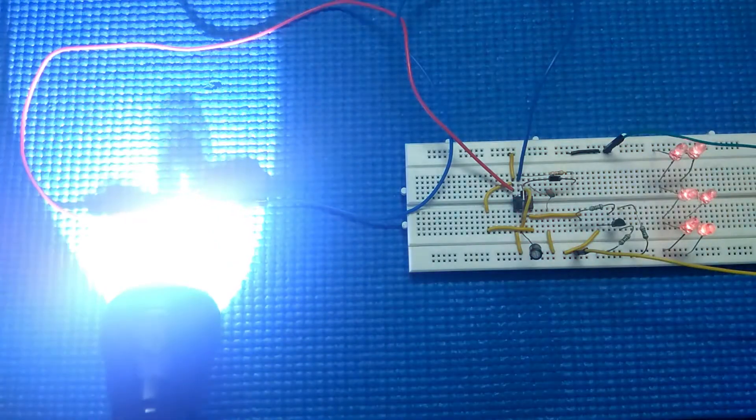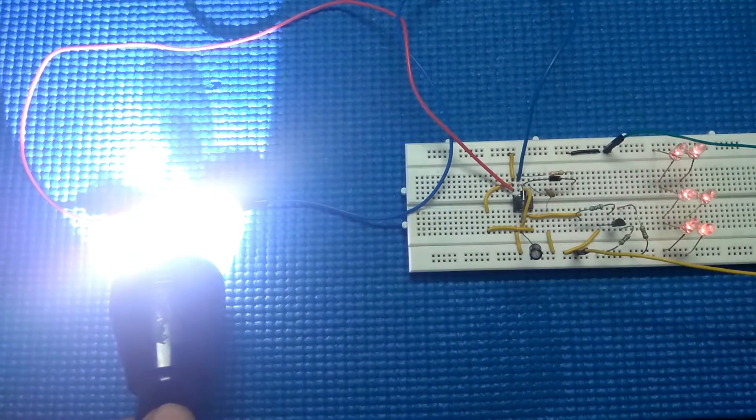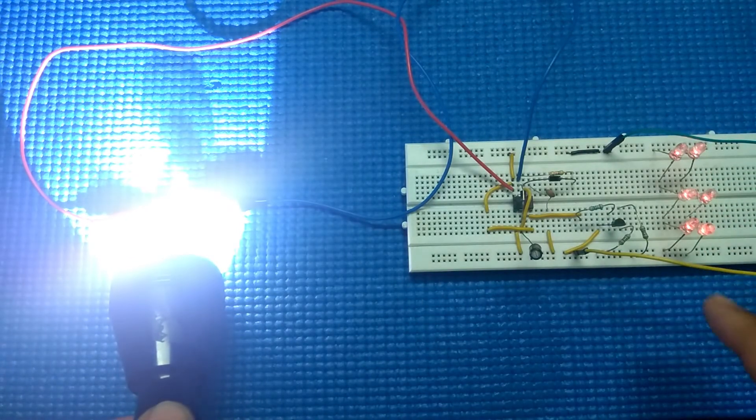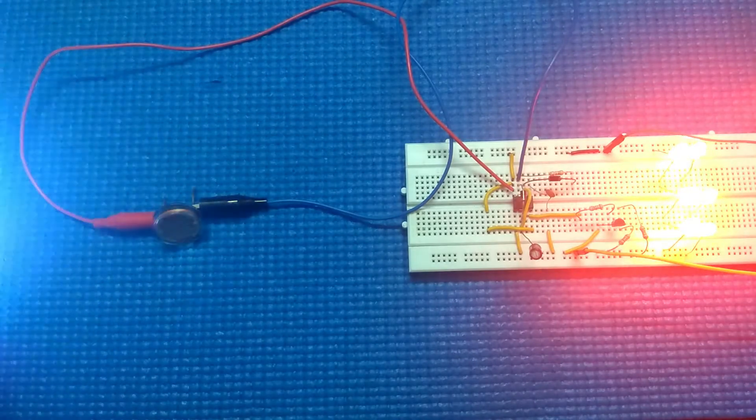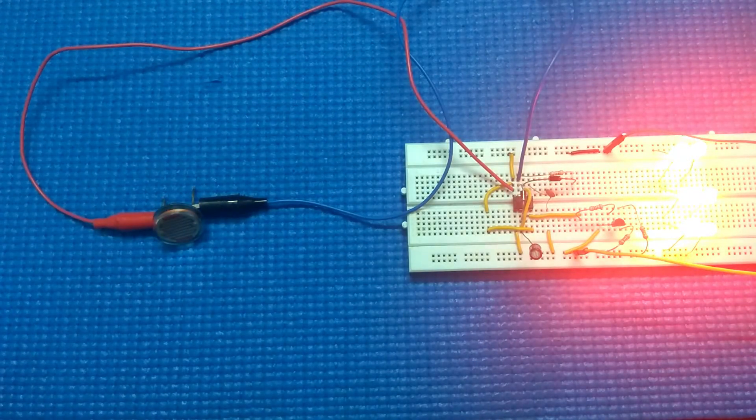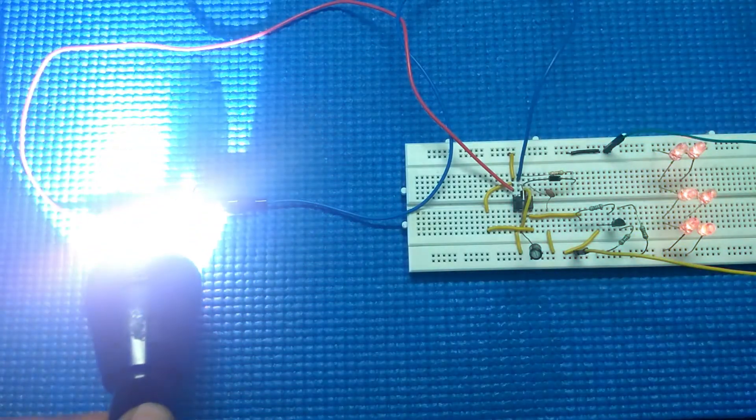When I light up my flashlight and point it towards LDR, the LED starts dimming. And when I move my flashlight, LED started to brighten up thus producing a fading effect courtesy of pulse width modulation PWM.